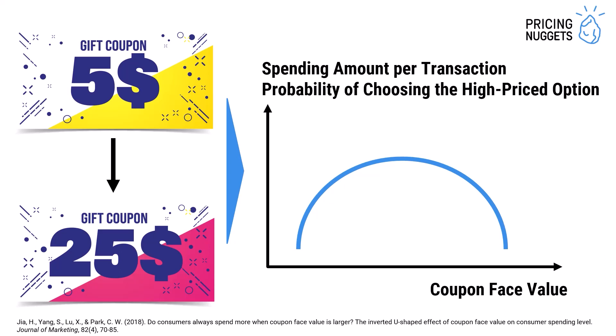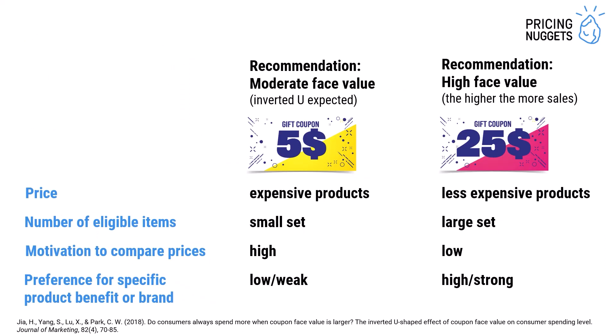After this turning point, a higher coupon value increases the perceived savings differences between the low-priced and high-priced option, so that the spending amount per transaction drops or the probability of choosing the high-priced option goes down again. When do we expect an inverted U relationship versus a linear positive relationship between coupon face value and transaction amount? Researchers found four factors.